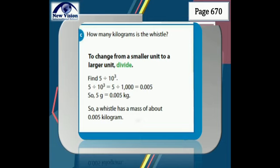To change from a small unit to a large unit, we divide. For example, converting 5 grams to kilograms: since grams are smaller than kilograms, we divide. 5 divided by 1,000 equals 0.005. So 5 grams is equal to 0.005 kilogram.